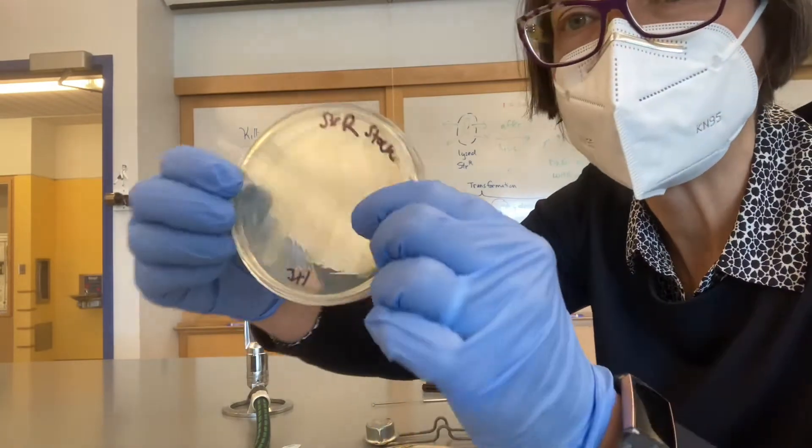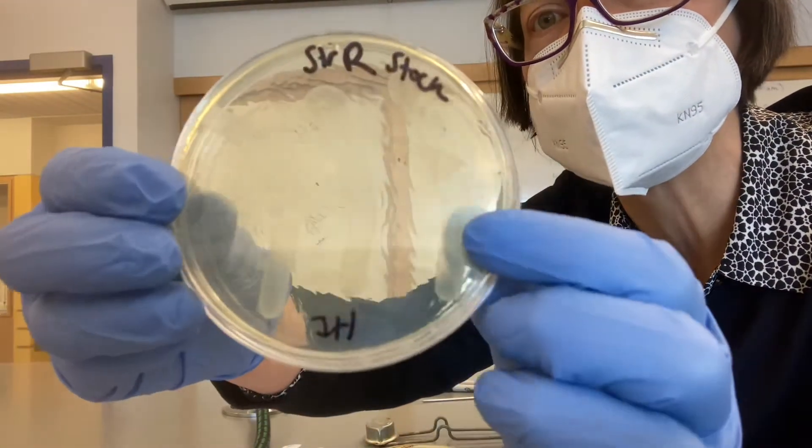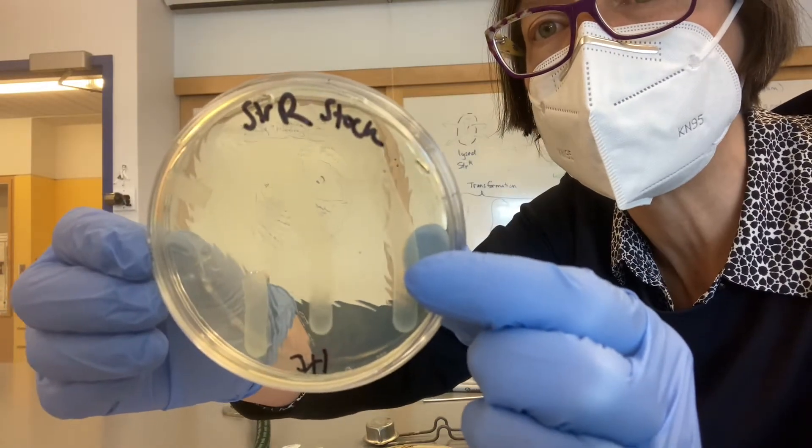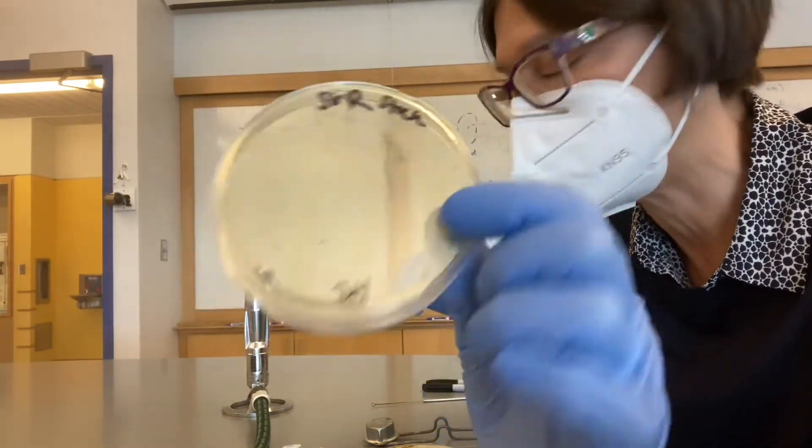And then we have a plate that also has cells growing on it. You can see the film through here. And it's the STRR strain, and it has the AAD2 gene.